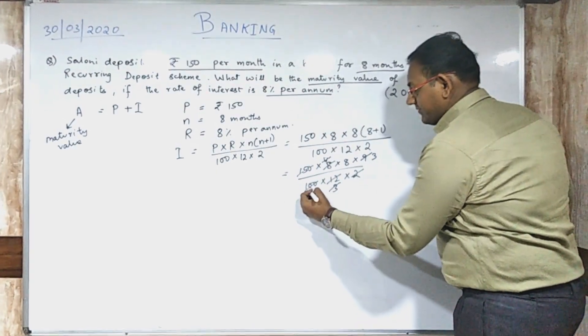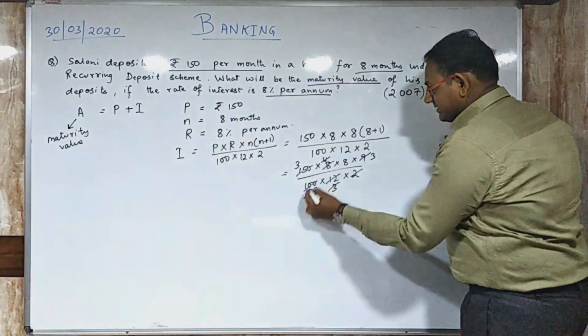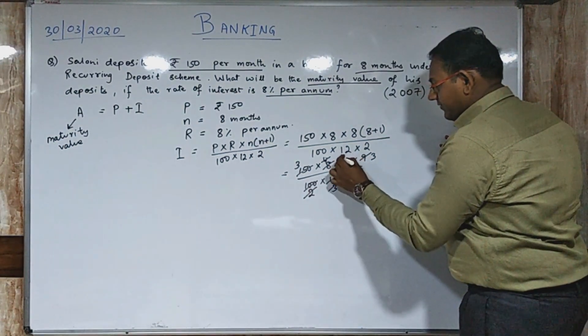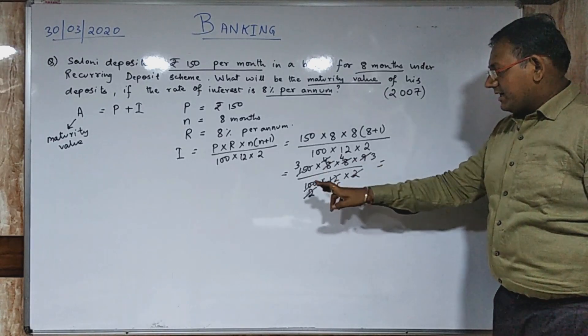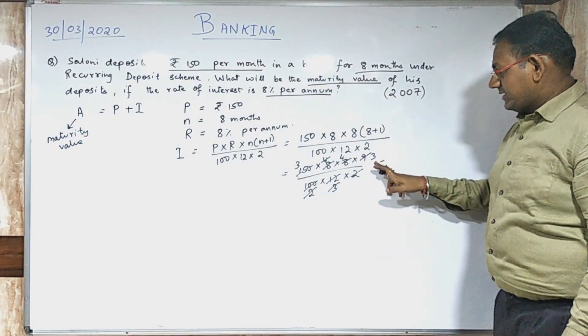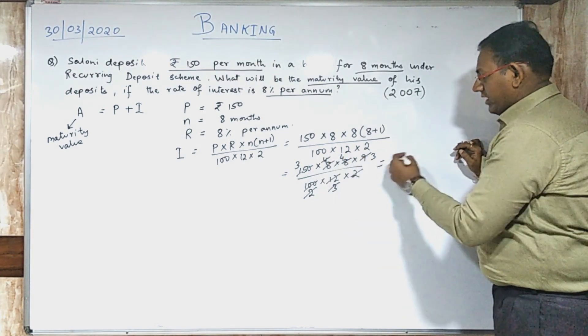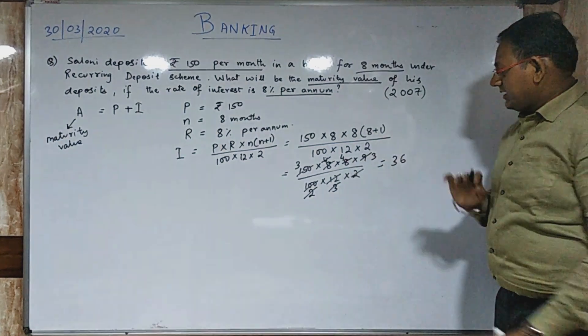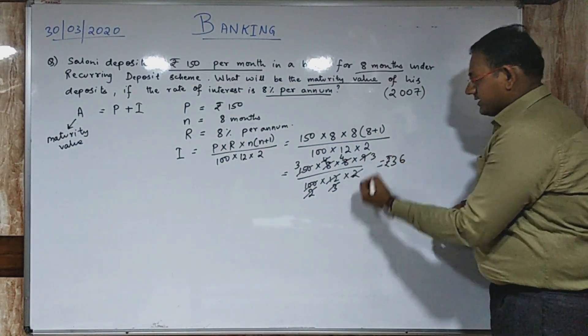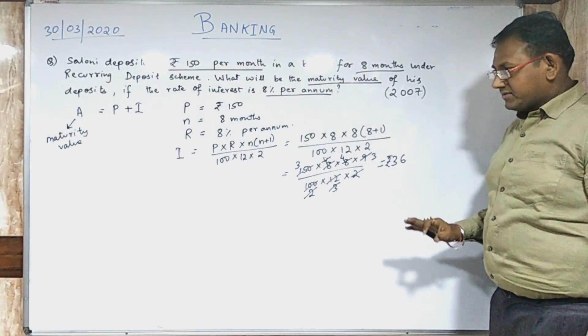Let us cancel this - we are getting 4. Cancel this - we are getting 3. Cancel this - we are getting 3 over here. This can be cancelled by 50 - we get 2 over here and 3 over here. Let us cancel this also - we are getting 4. If we multiply the numerator, we get 3, 4, and 3. So 3 times 4 is 12, 12 times 3 gives you 36. This is the total interest at the end of 8 months.